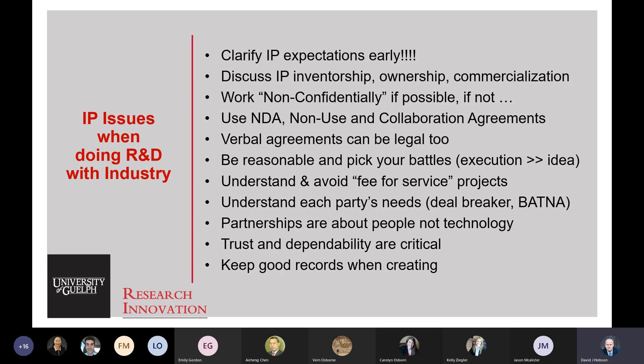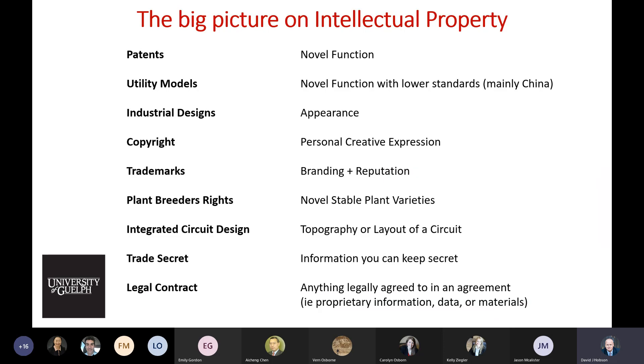Partnerships are about people, not technology. If people start getting angry, the whole thing falls apart. Trust and dependability are essential — both parties need to depend on each other to get the job done and to be truthful and transparent. Trust is extremely important when creating new IP funded by industry. Keep good records. When we look at intellectual property, the big picture is: what are the main tools used and why? Well, patents — which often get a bad rap but are just a tool that can be used well or poorly — are about protecting the novel function of something, how it works, what it does.